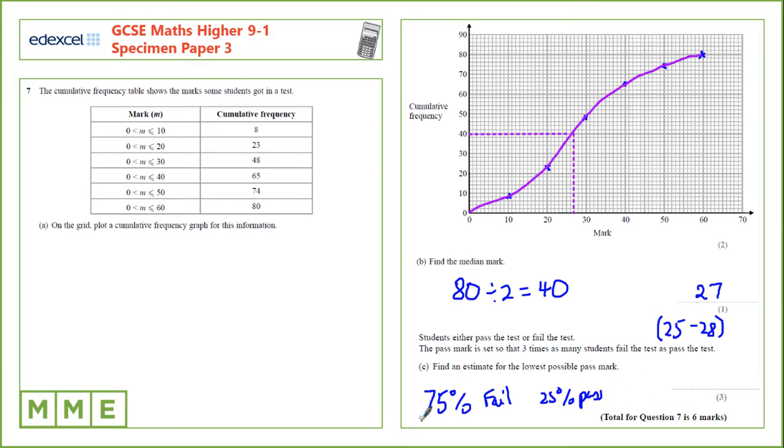So the pass mark must be set at the upper quartile. Let's find out what the upper quartile is. So if we take 80 and multiply that by 75% we'll find that the upper quartile should be marked at 60. Again as before we'll read across from 60 and then down to find our upper quartile.